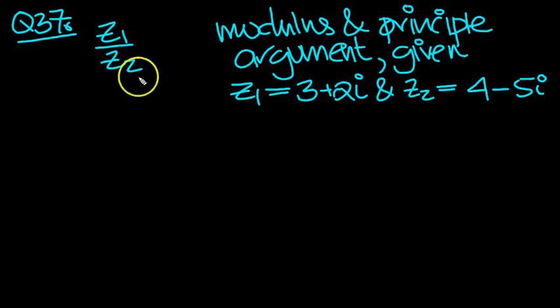Find the modulus and principal argument of z1 over z2, given z1 is 3 plus 2i, and z2 is 4 minus 5i.